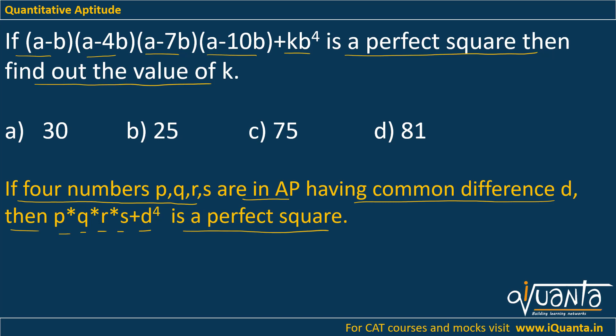So if four numbers which are in AP are being multiplied, if you add the difference to the power 4 to it, you will get a perfect square. Using this rule, you can solve this question within 10-15 seconds.